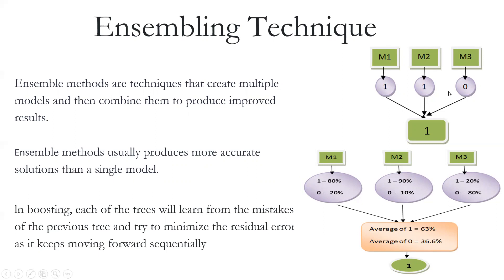Here we can see M1, M2, M3 are different models. From M1 we get one as output, from M2 suppose we get one, and from M3 we get zero. Then we use voting: whichever has the maximum votes defines the final output. So here two times one and one time zero, so the final output of this combined model, which is called the ensemble model, is one.